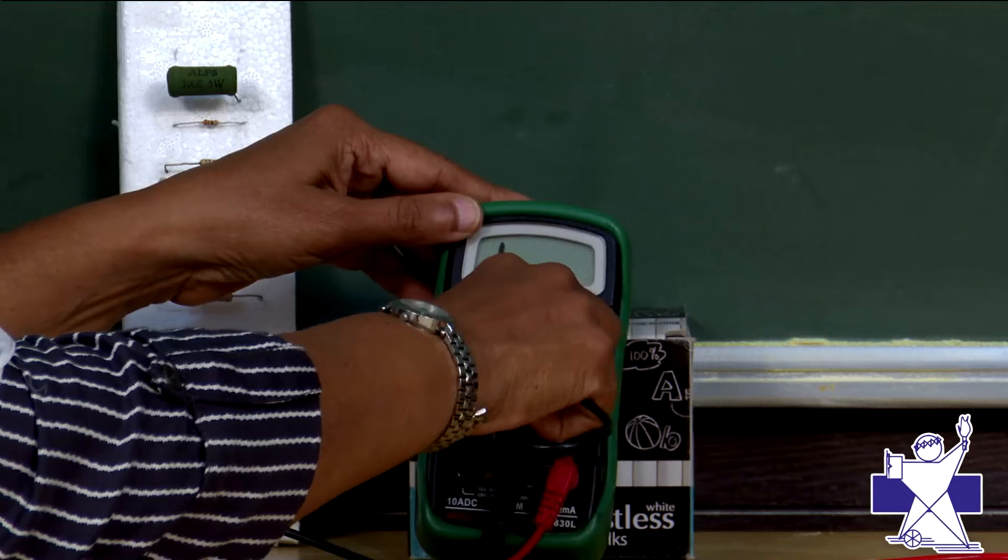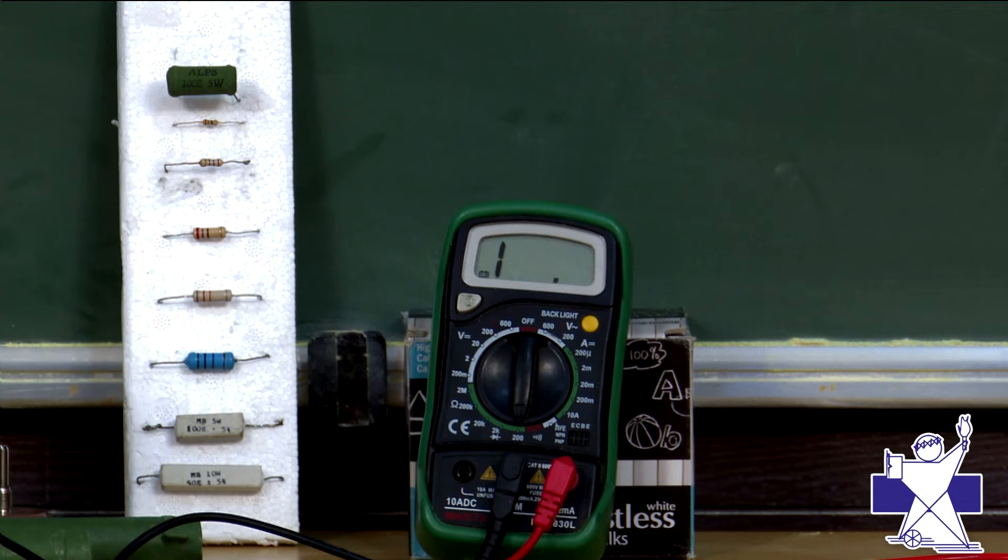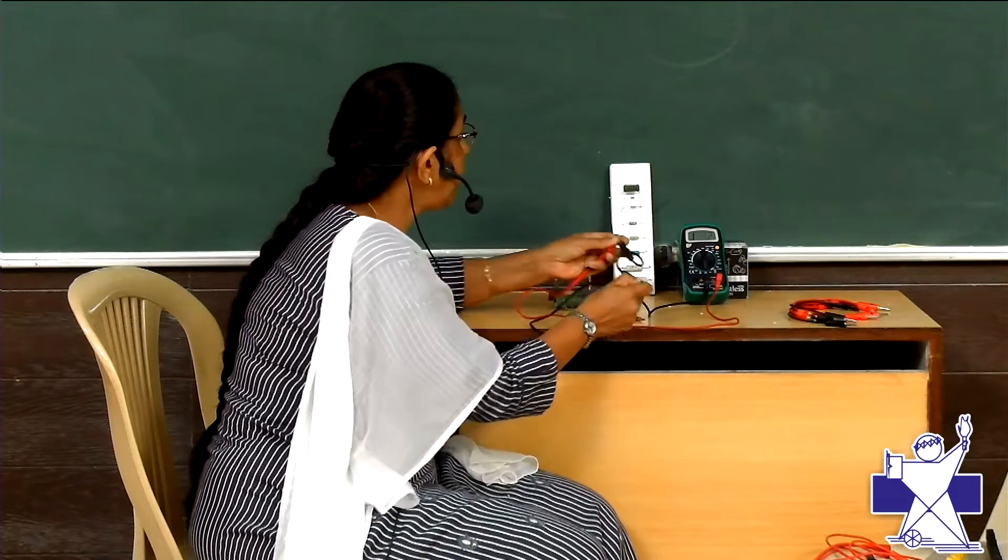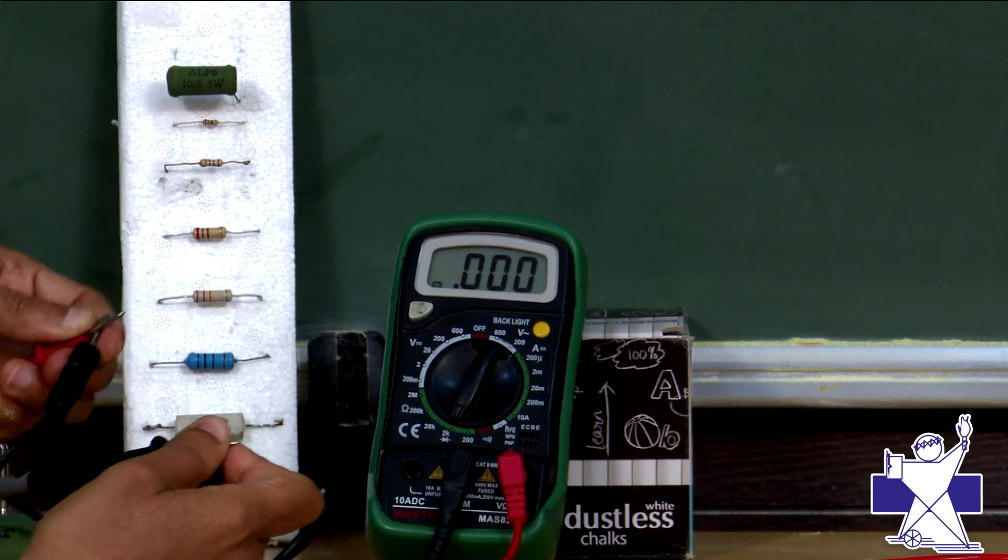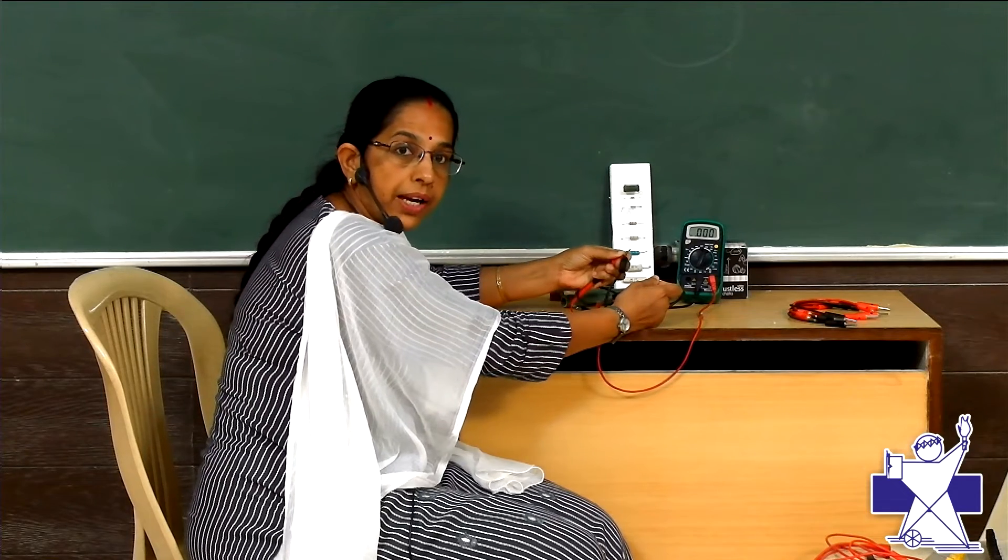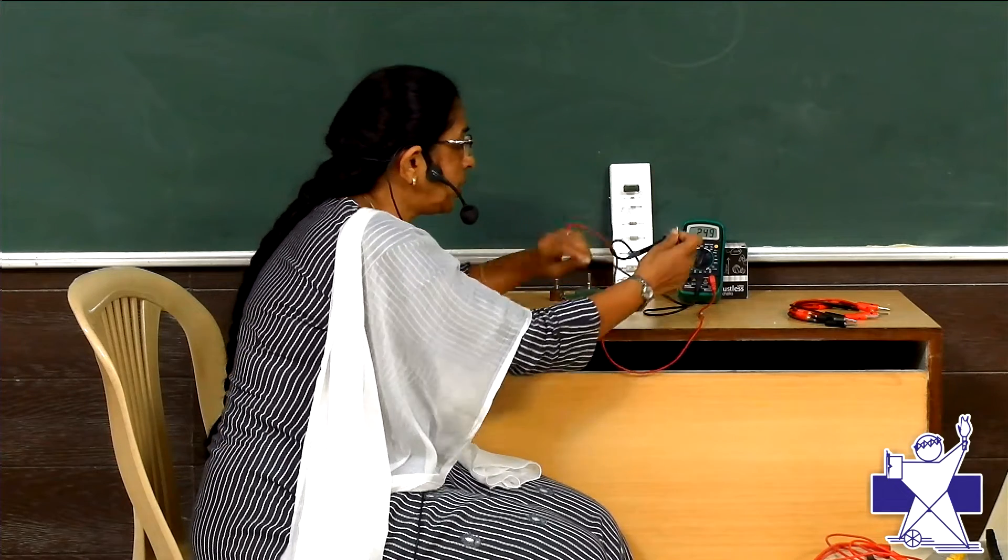So, I am just bringing to, just connecting this. Resistance does not have positive or negative. You can connect any terminal. And now, see here, it is showing zero ohms. So, resistance of the copper wire or the patch cord is zero. So, it is showing the resistance.